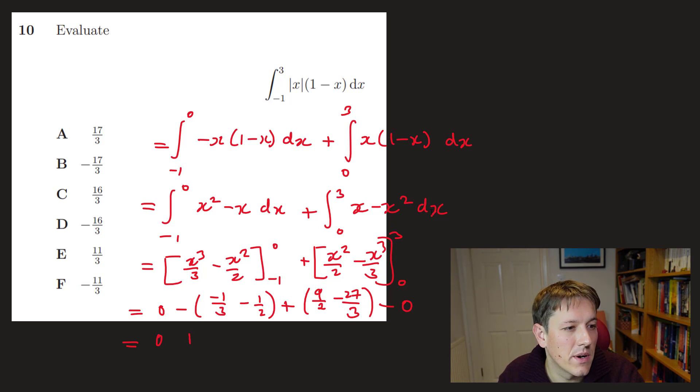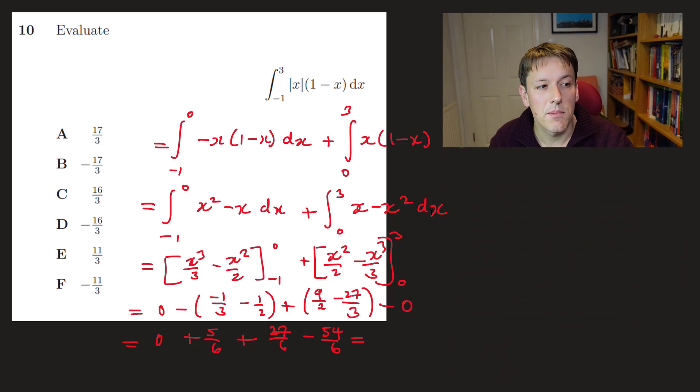So, and then minus 0 for the 0. So let's just work this out. That's 0. And this is minus 1 third minus 1 half. So that's minus 5 sixths. But then it's minus. So I get plus 5 sixths. So I think let's just put everything over 6 here. I know I can simplify this. But 9 over 2 is 27 over 6. And minus 27 over 3. So minus 54 over 6. So I've got 27 minus 54 is minus 27. Plus 5 gives us minus 22 over 6. Which is minus 11 over 3. And so the answer there is f.